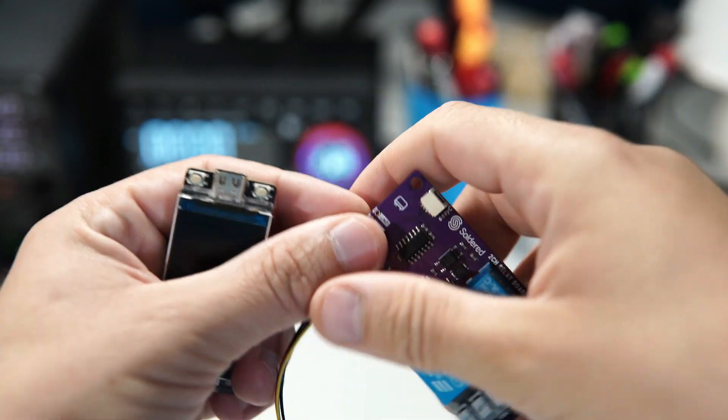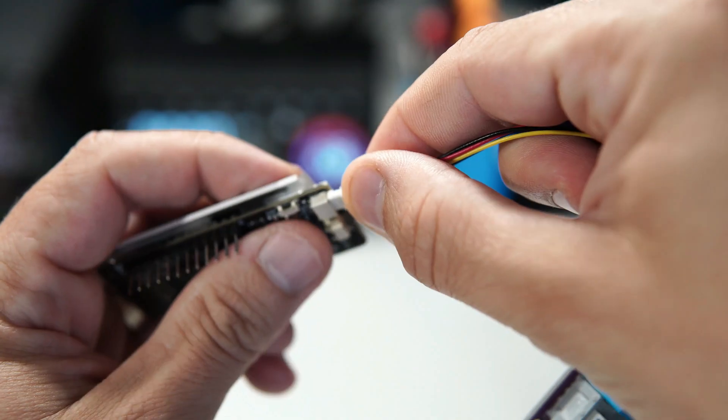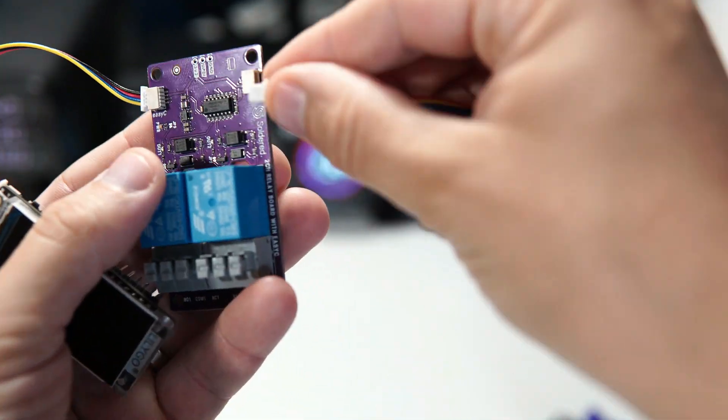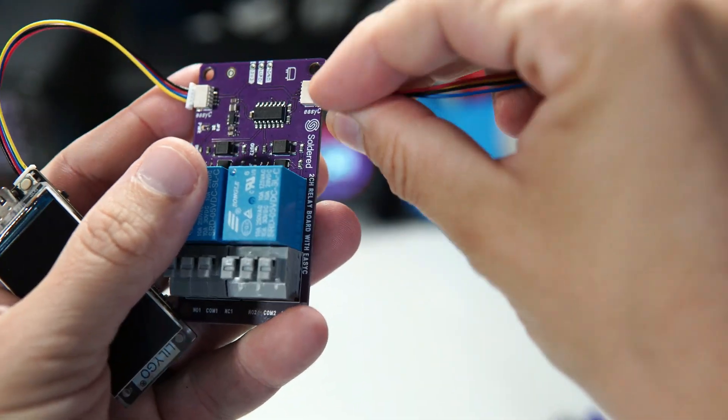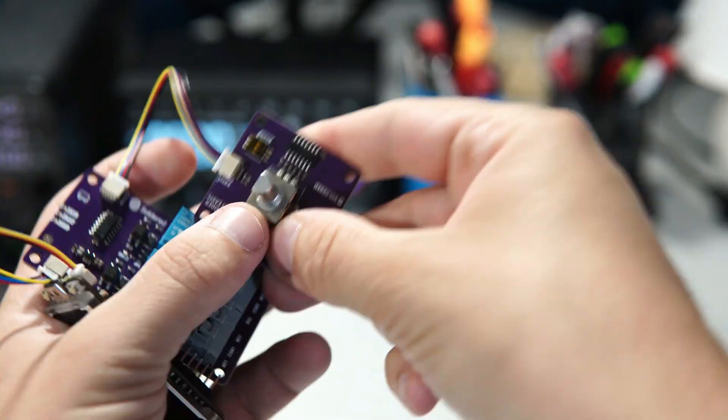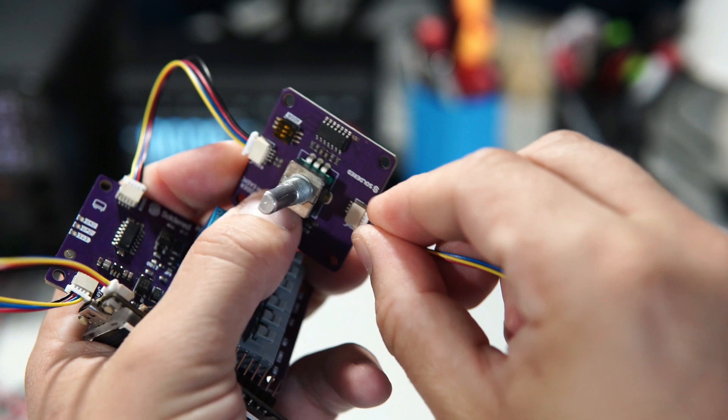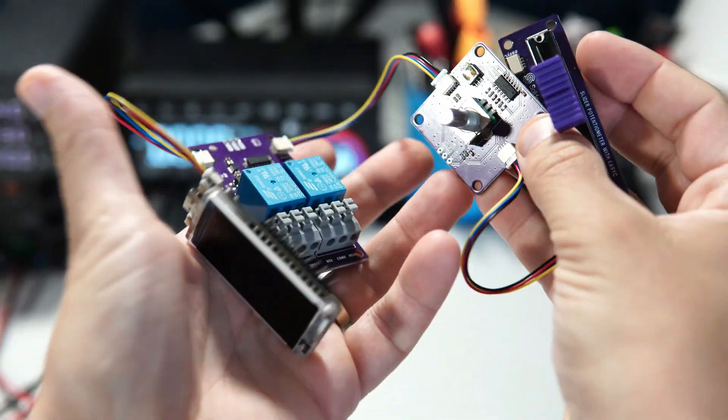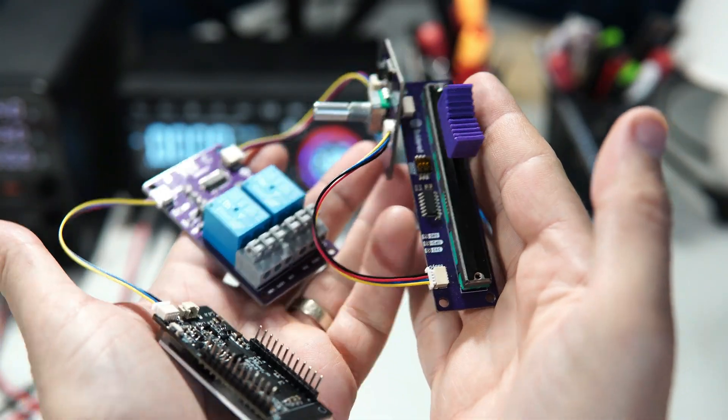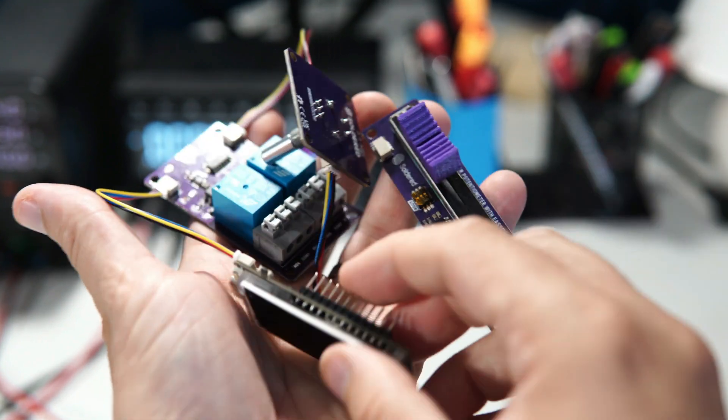I will use these modules produced by Soldered Company. They are also from Croatia. A group of young and creative people who create excellent products. Their modules integrate smoothly with Liligo development boards, enabling quick connection of multiple modules to the board in very short time.